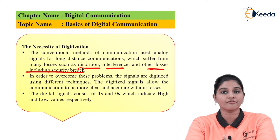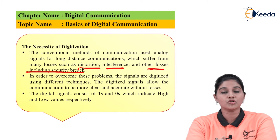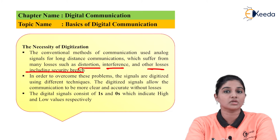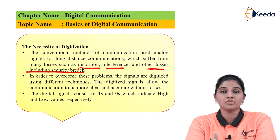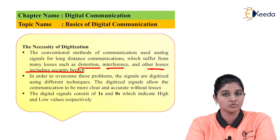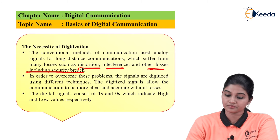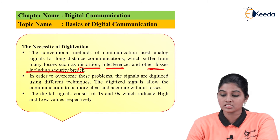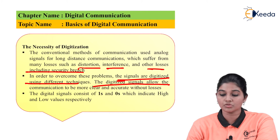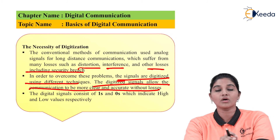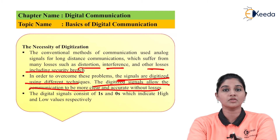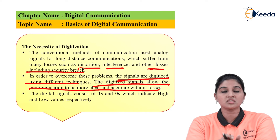At the same time, various factors affect the signal, which causes distortion. The signal gets mixed with noise, and because of that the information may get corrupted or damaged. Sometimes the wrong information may be received by the user. Therefore, security is also a concern during transmission of the analog signal. In order to overcome this problem, signals are digitized using different techniques, allowing communication to be more clear and accurate without any loss.